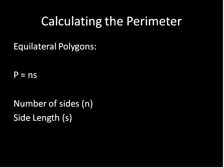There are a couple of different ways to calculate perimeter. In equilateral polygons, where each side length is congruent, you can just multiply the number of sides, n, times the length of the side, s, and that will give you the perimeter of that polygon.